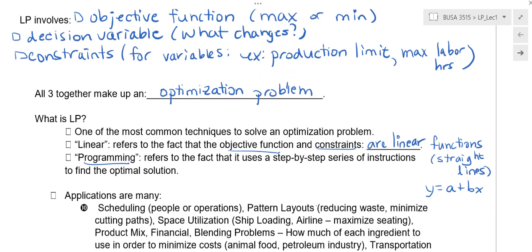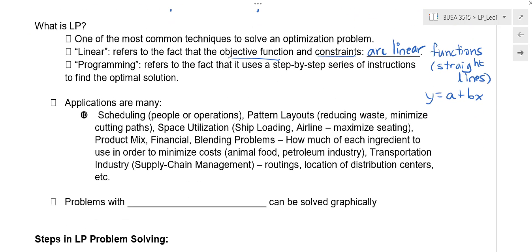Now, programming refers to the fact that it's a step by step series of instructions to find the optimal solution. It's essentially a program, whether you do it in Excel or on a computer or by hand, you're basically following a series of steps. They're called a program.